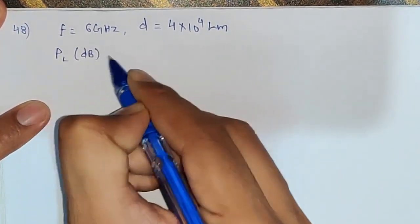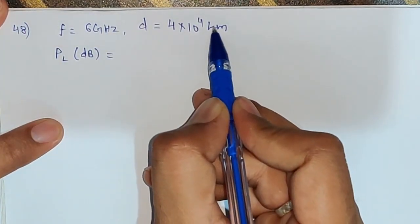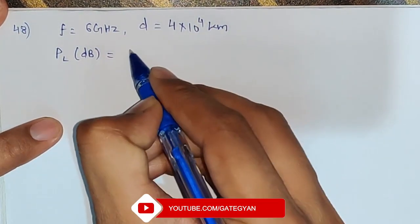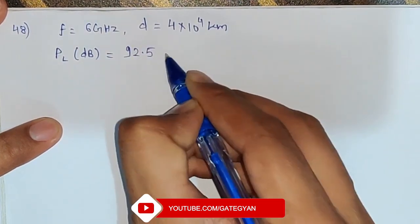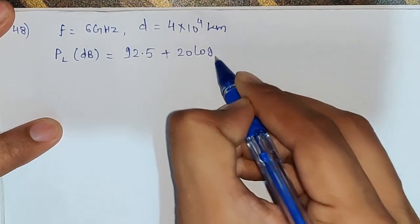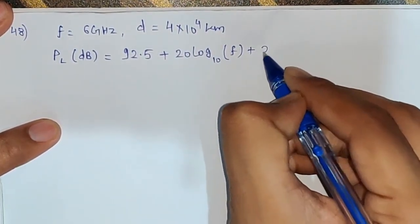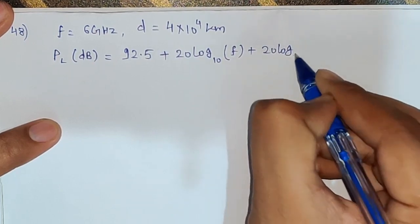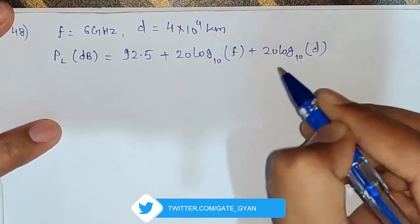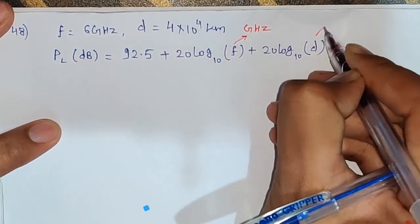The formula is given as 92.5 + 20log₁₀(f) + 20log₁₀(d), where frequency f is in gigahertz and distance d is in kilometers.